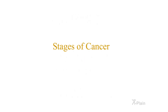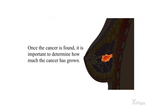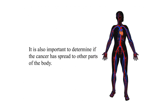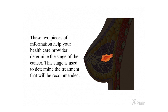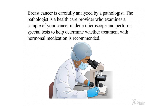Stages of cancer. Once the cancer is found, it is important to determine how much the cancer has grown and if it has spread to other parts of the body. These two pieces of information help your health care provider determine the stage of the cancer, which is used to determine the recommended treatment. Breast cancer is carefully analyzed by a pathologist — a health care provider who examines a sample of your cancer under a microscope and performs special tests to help determine whether treatment with hormonal medication is recommended.